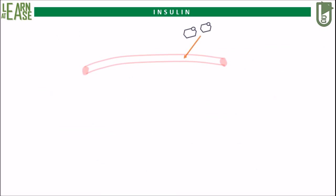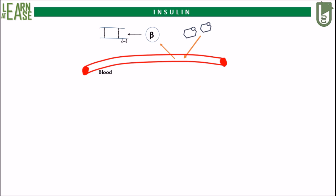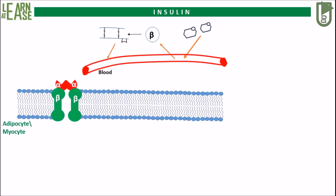Briefly, when glucose enters the blood, it will activate beta cells of islets of Langerhans to release insulin, which will then enter the blood and reach the target tissue. In this case, the target cells considered are adipocytes and myocytes. The vesicle containing GLUT4 in the cytoplasm is shown, and the insulin receptor is a transmembrane protein which has two alpha subunits and two beta subunits. Insulin will bind to the alpha subunit which is located on the exterior of the cell, and this will cause the activation of the receptor.